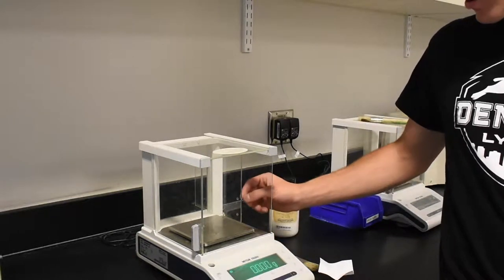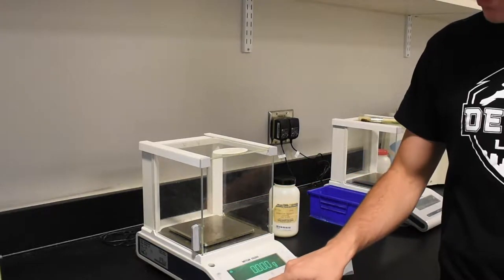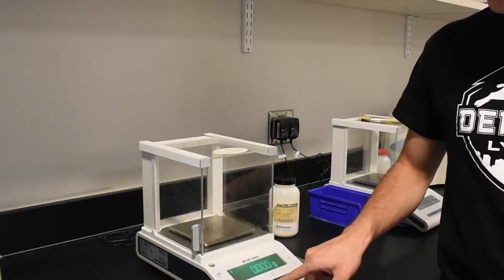The second step is to close the doors, turn on the balance using the power switch, and then tare the balance to zero.